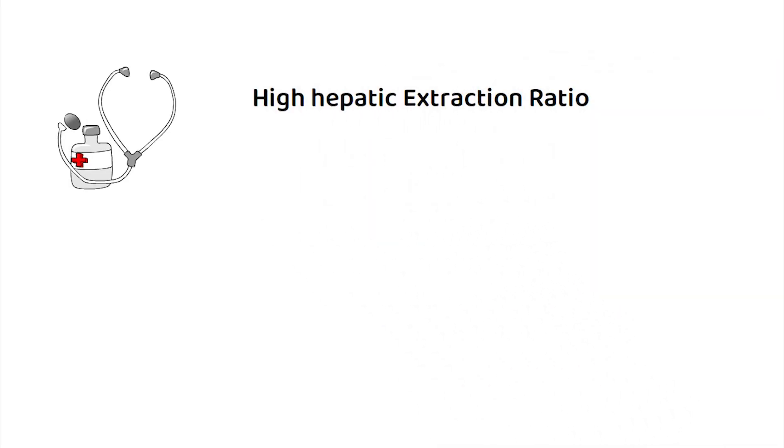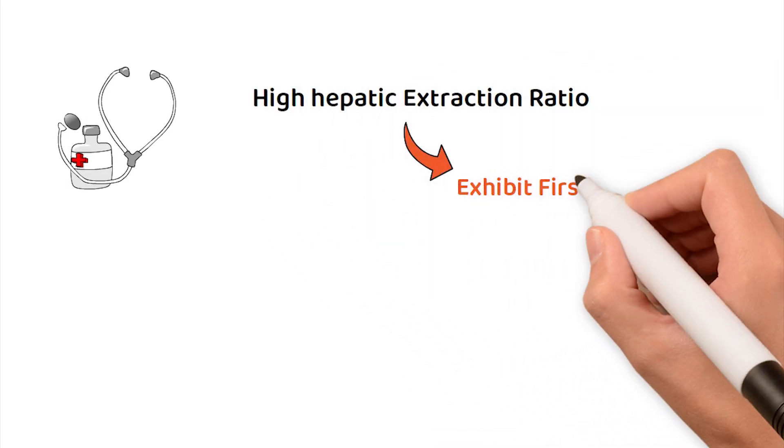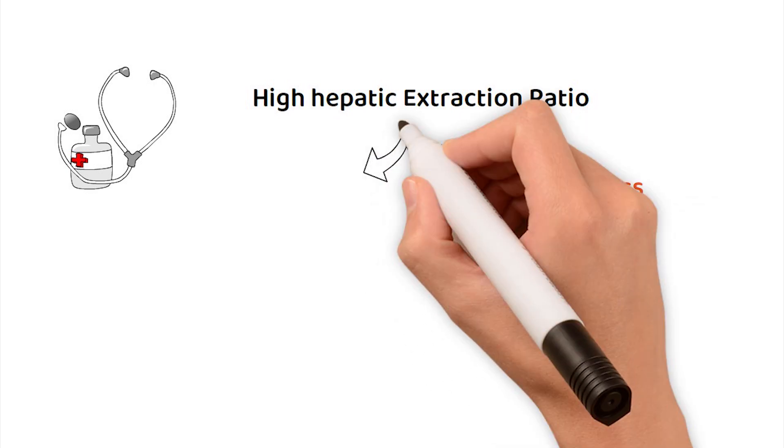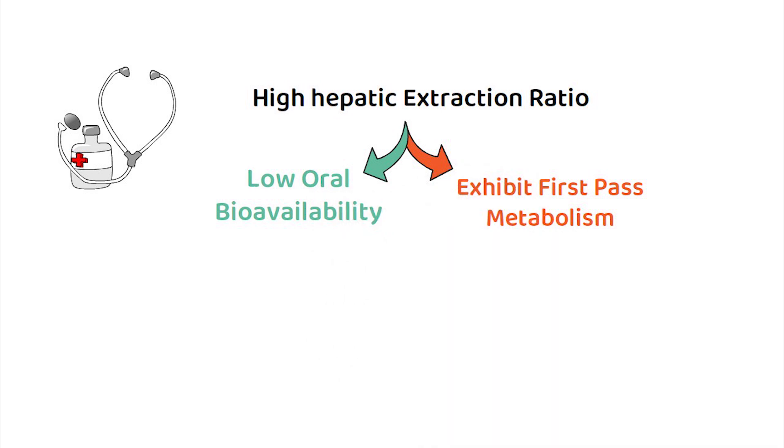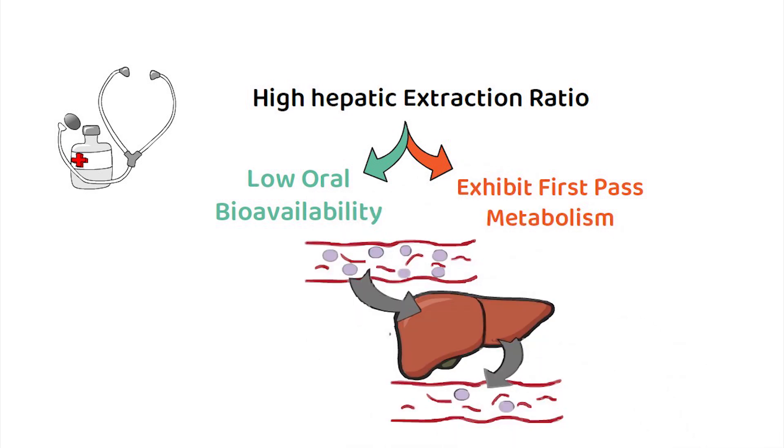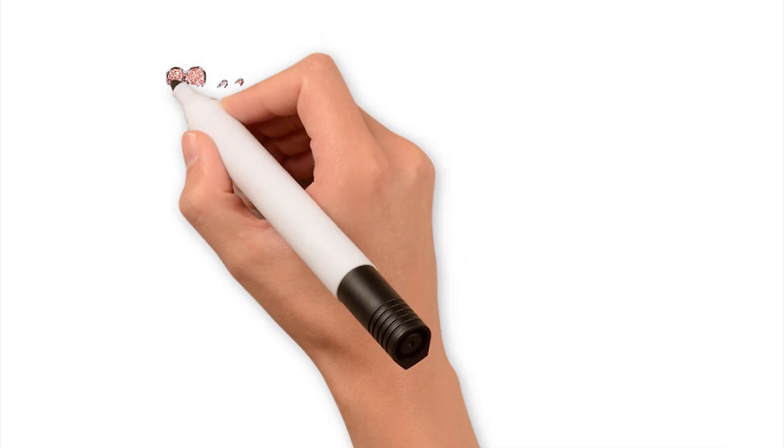From a clinical standpoint, drugs with a high hepatic extraction ratio exhibit extensive first pass metabolism. This often results in low oral bioavailability, as a substantial fraction of the dose is extracted by the liver before reaching systemic circulation.